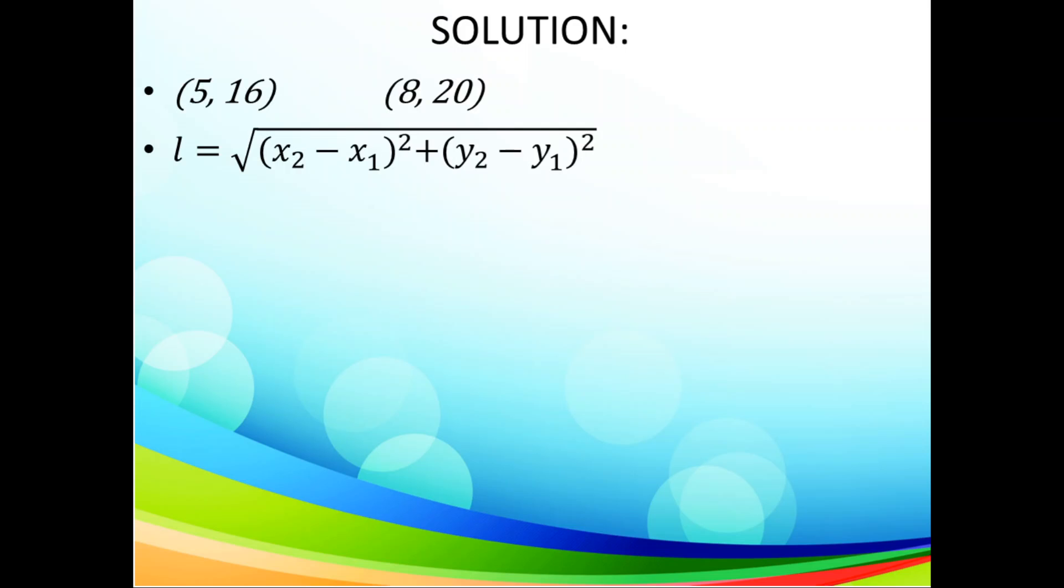We write our coordinates and our formula. Then, after that, it is straight substitution. So we'll have 8 minus 5 and 20 minus 16. So 8 take away 5 is 3 and 20 take away 16 is 4.